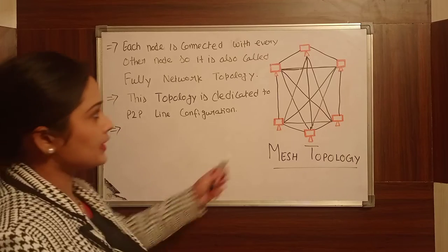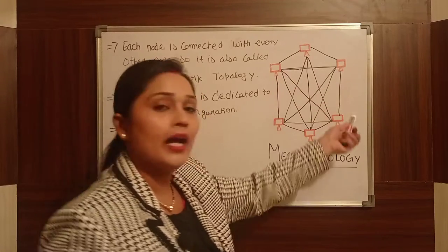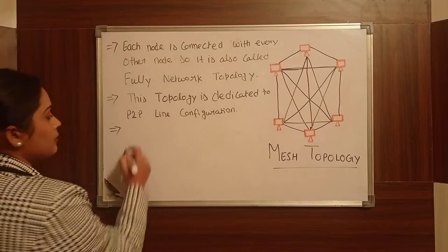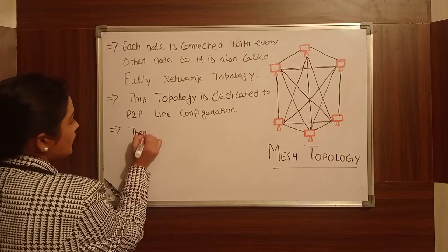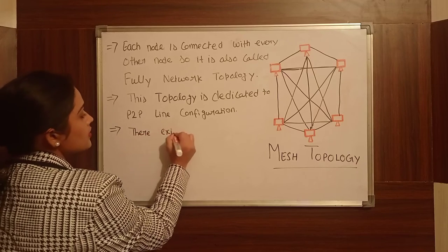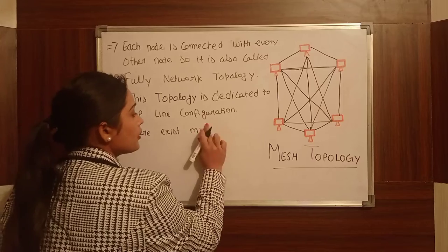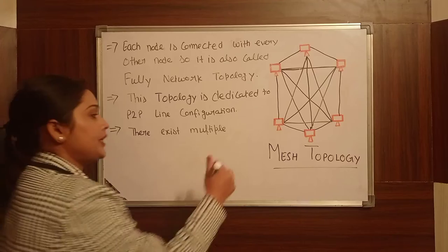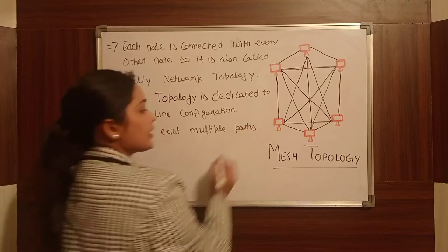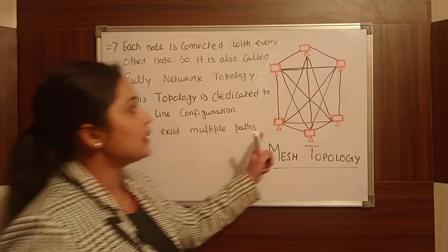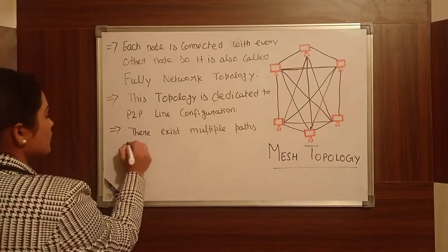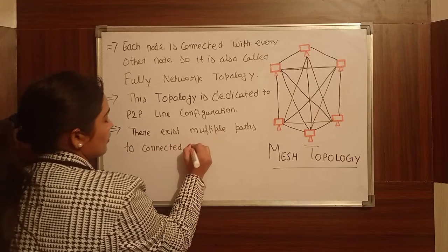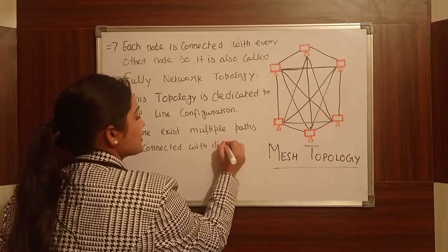The third point is that there exist multiple paths. It means there exist multiple paths to connect with different devices and different nodes.